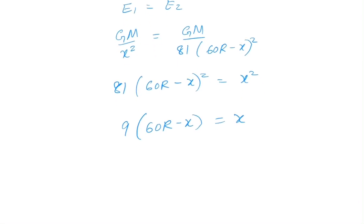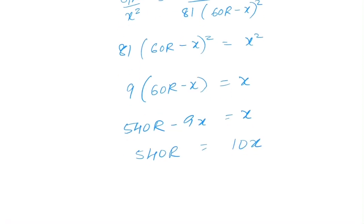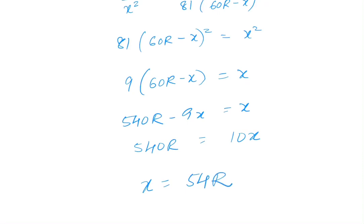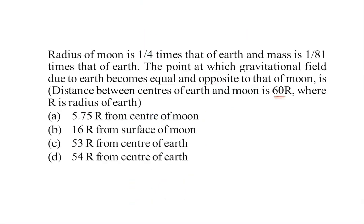Now we can simplify this: 540R - 9x = x, or 540R = 10x, so x will be 54R. Here we can clearly see that option D is correct. This is the right answer.